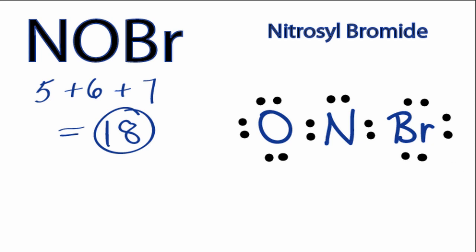We can see the Oxygen and the Br both have 8 valence electrons. They have octets. But the Nitrogen only has 6 valence electrons, so it does not have an octet. We can take these 2 electrons here from the Oxygen and move them and form a double bond, so now they're sharing them, and that should fix our octet problem.